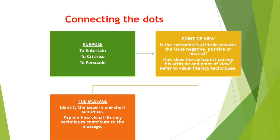So we start with the easiest part: purpose. It can either be to entertain, to criticize something in society or someone, or to persuade. Then point of view — is the cartoonist's attitude towards this issue negative, positive or neutral? How does the cartoonist convey his attitude and point of view? Refer to the visual literacy techniques — things like irony, puns, speech bubbles, body language, facial expressions, all these things we've covered already. And then lastly, the message: identify the issue in one short sentence. What is the issue the cartoonist is tackling? Then explain how visual literacy techniques contribute to bring about the message.